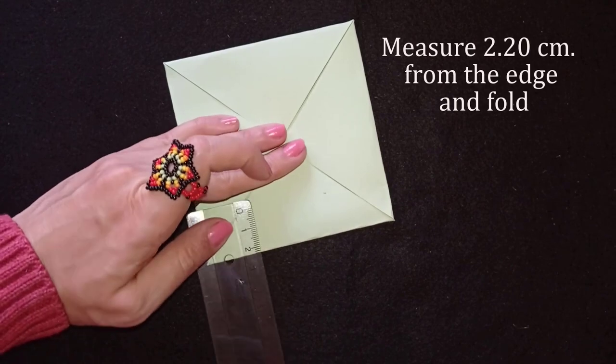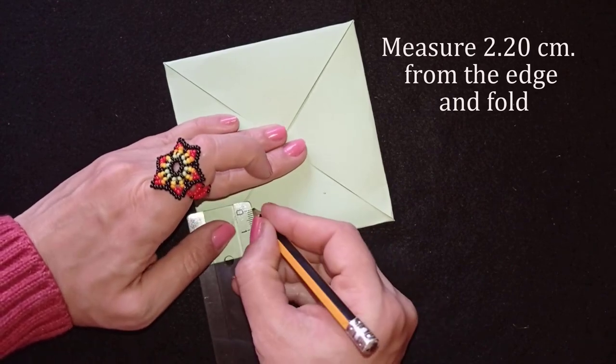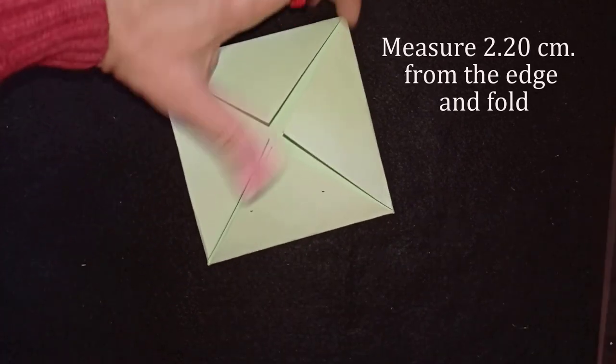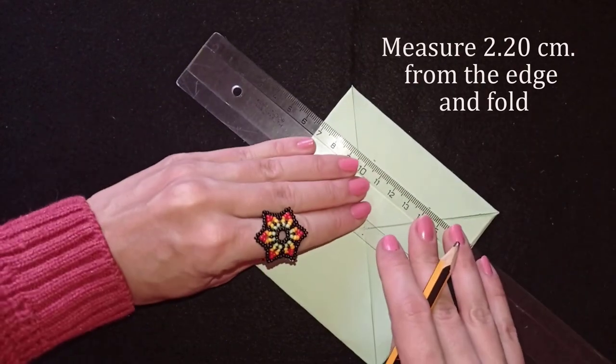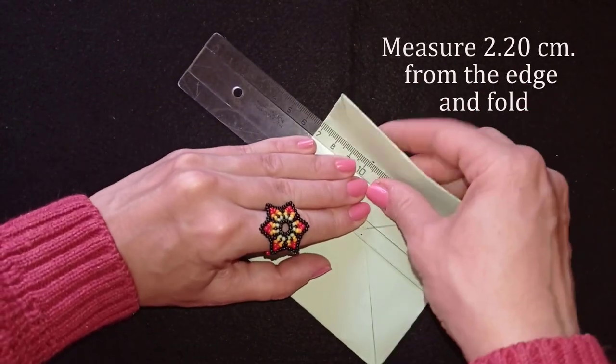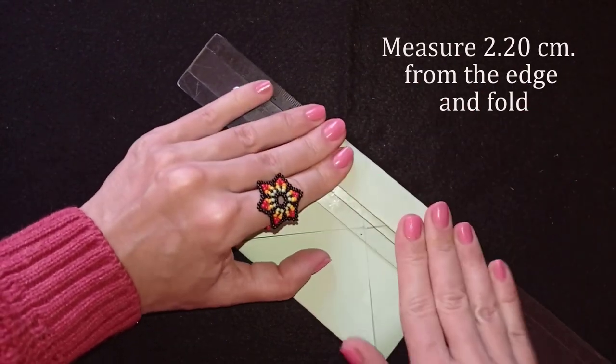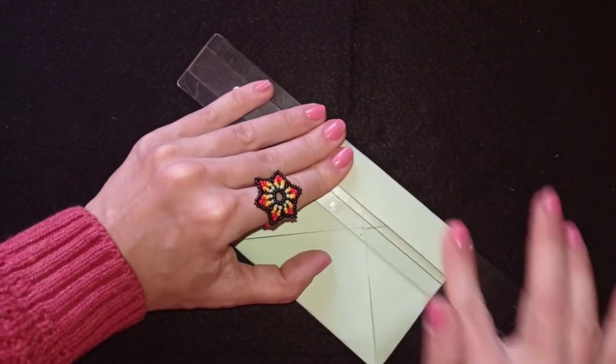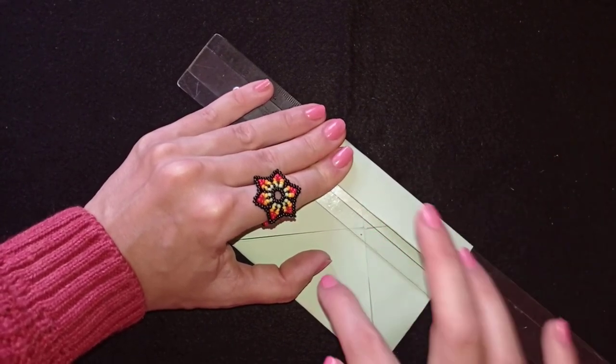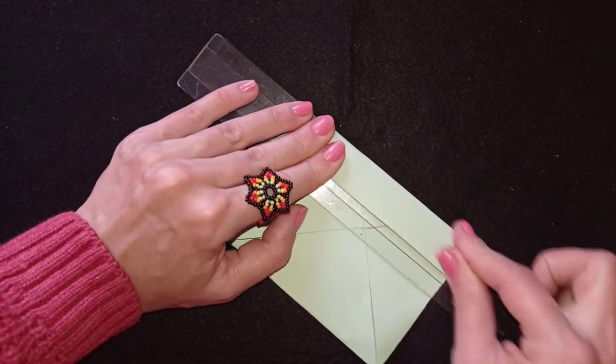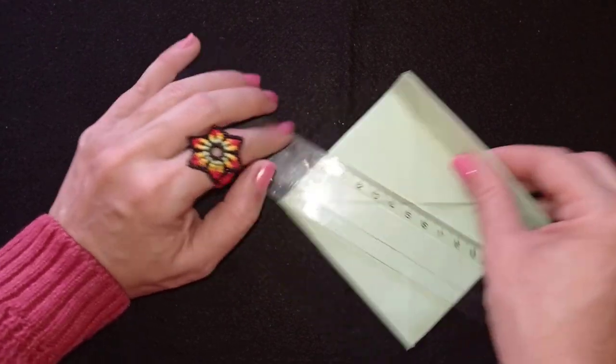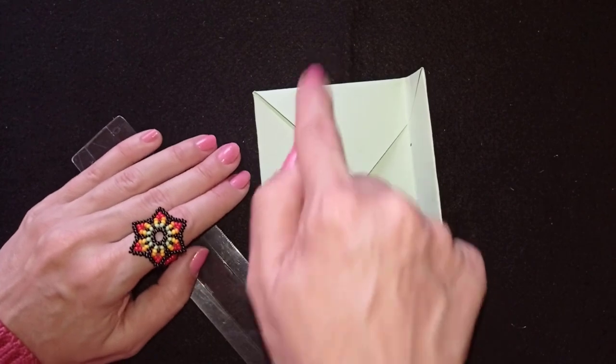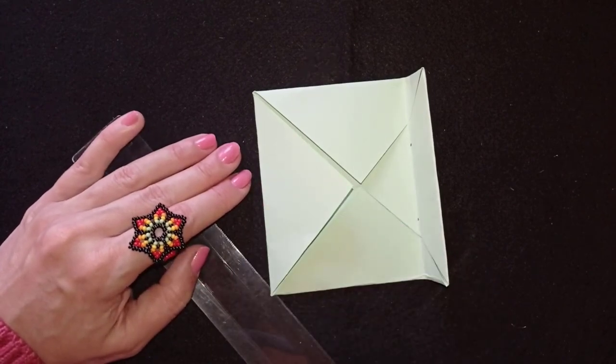Now I will fold it like this. In this way, the side will be bigger and the bottom will be smaller and both pieces could fit together perfectly. I'll do off camera those other three sides.